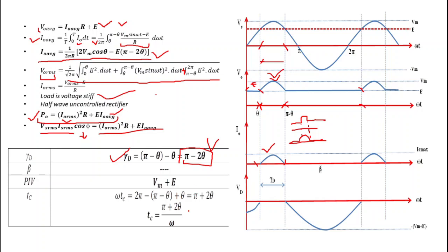The peak inverse voltage (PIV) is the maximum reverse voltage appearing across the diode. As shown in the waveform, the maximum reverse voltage equals VM plus E, so PIV equals VM plus E.